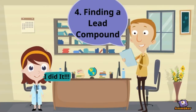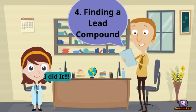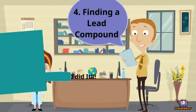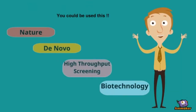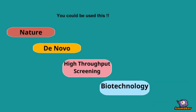To begin looking for a drug, researchers search for a molecule or lead compound that may act on their target to alter the disease course. If successful — over long odds and years of testing — the lead compound can ultimately become a new medicine.